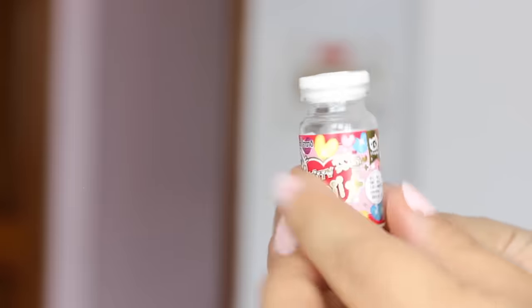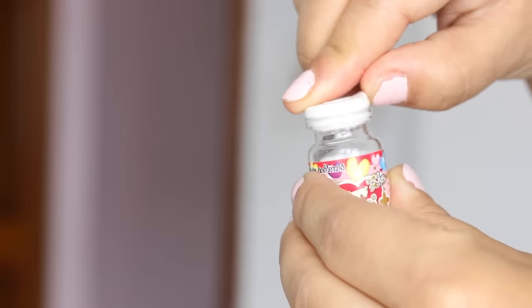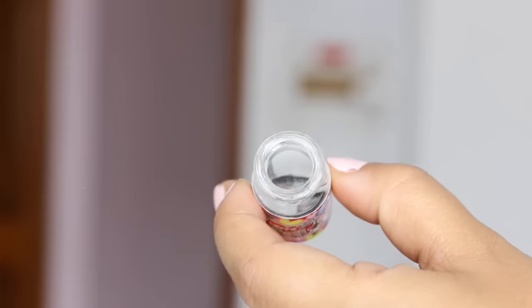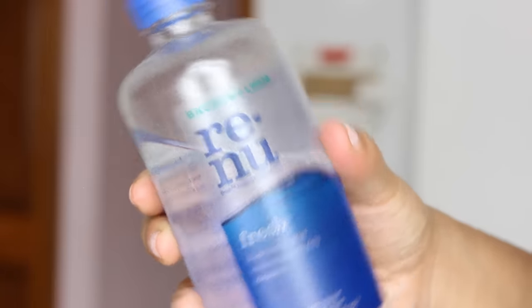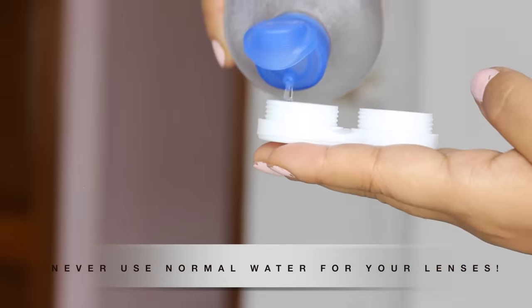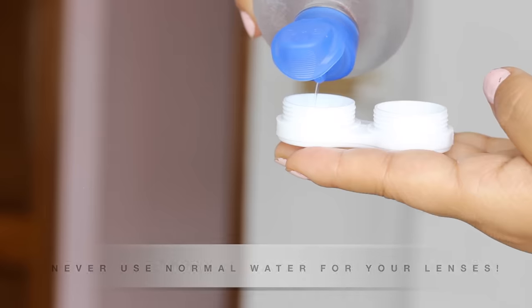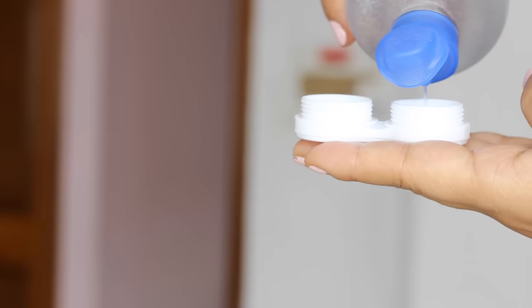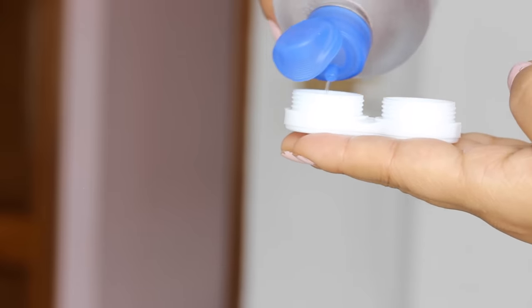Once that's done, you are left with this rubber cap which you can easily pop open with your fingers and there lies your contact lens. At this point, take your lens solution and fill your lens cases halfway up with the solution, and make sure you use extremely new and extremely clean lens cases. That is very important.